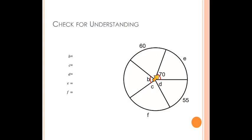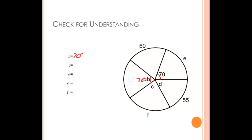Let's do a check for understanding on that. As we look here, we're going to figure out the value of each of these variables. I start and I see that this central angle right here is 70 degrees, and it's given one little congruency mark there. We have a similar mark for variable B, so B is going to have the same measure of 70 degrees. Then, if this angle is 70 degrees — that's a central angle — E here would be the corresponding arc. With our new property, this arc is going to have the same measure as the central angle, so E is 70 degrees as well.